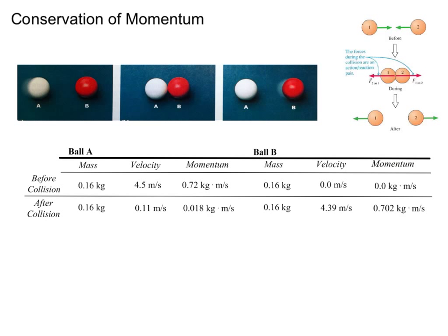Let's start by considering the momentum of two billiard balls. The stationary billiard ball, ball B, is set into motion by a collision with a moving billiard ball, ball A. We assume both balls are on a smooth table, both are of the same mass, and that neither ball rotates before or after the collision. Before the collision, the momentum of ball B is equal to zero because it's not moving, while ball A has a momentum of 0.72 kg·m/s. During the collision, ball B gains momentum while ball A loses momentum.